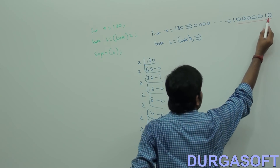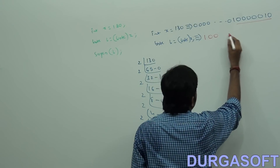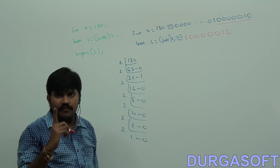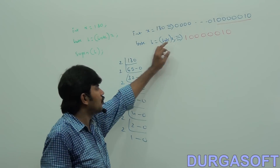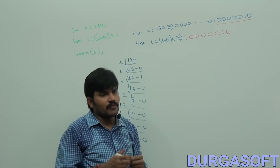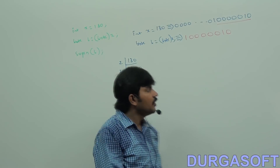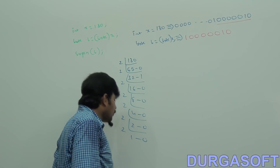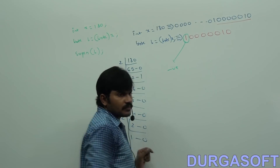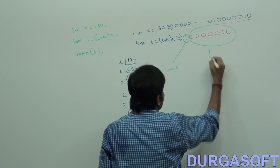So the last 8 bits are: 1, 0, 0, 0, 0, 0, 1, 0. Now, the most significant bit of this 8-bit value is 1. If it is a negative number, the remaining bits represent the value in 2's complement form.